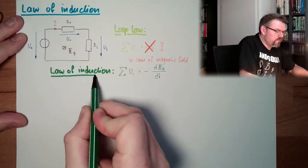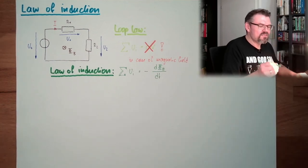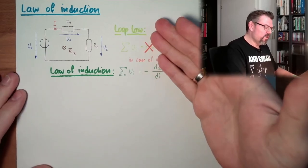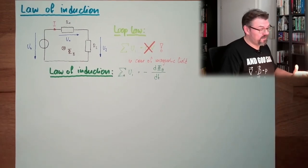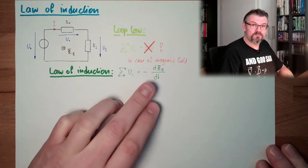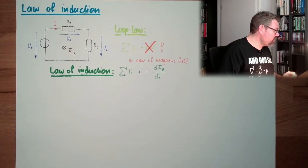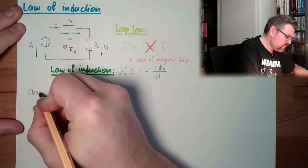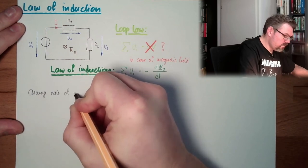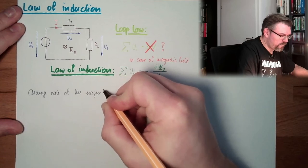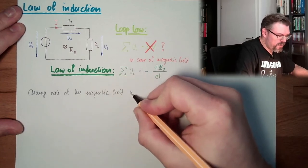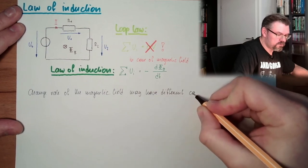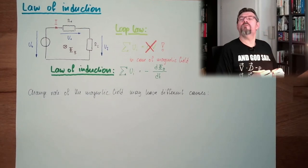In case of magnetic field is not entirely correct, because if there are stationary magnetic fields, then it does not really matter. So the loop law is then replaced by the law of induction, or extended, let's call it extended. And so we have a change rate of a magnetic flux. Where can this change come from? The change rate of the magnetic field may have different causes. What causes can there be?